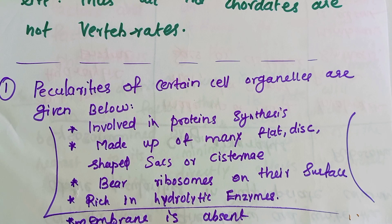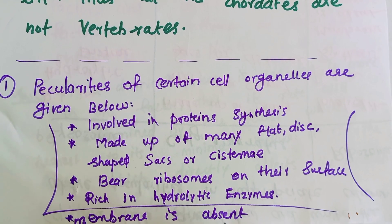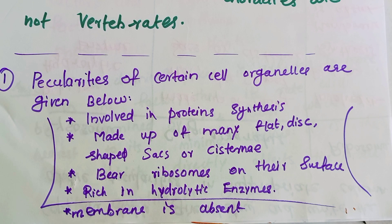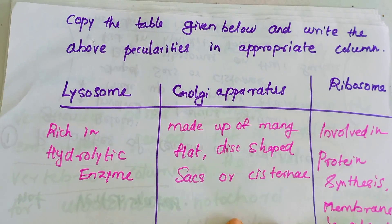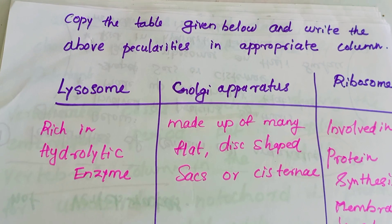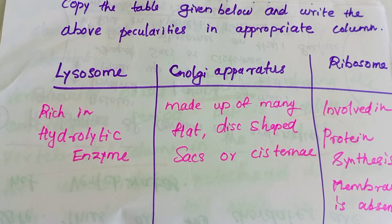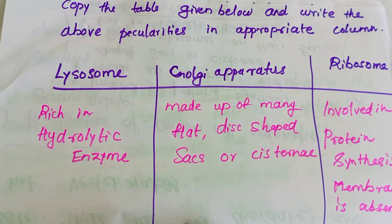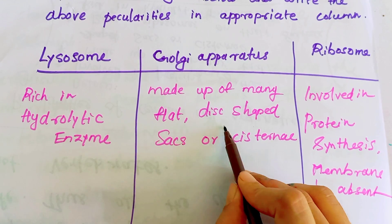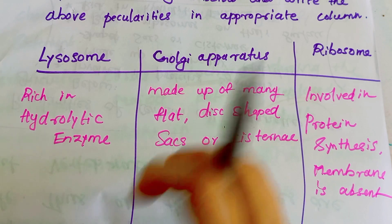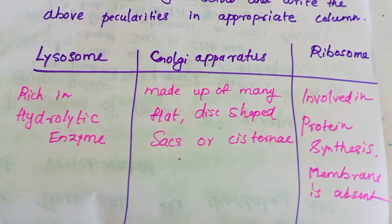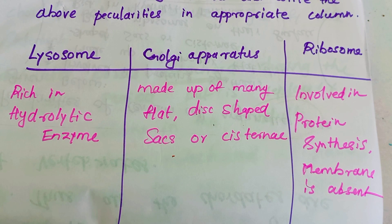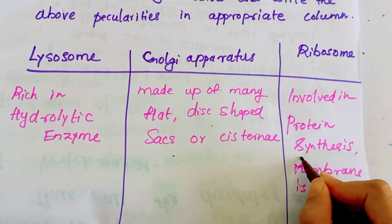Peculiarities of certain cell organelles are given. The cell involved in protein synthesis with membranes absent is the Ribosome. Made up of many flat disc-shaped sacs or cisternae is the Golgi apparatus. Rich in hydrolytic enzymes is the Lysosome. These three organelles — Ribosome, Golgi apparatus, and Lysosome — have distinct features.